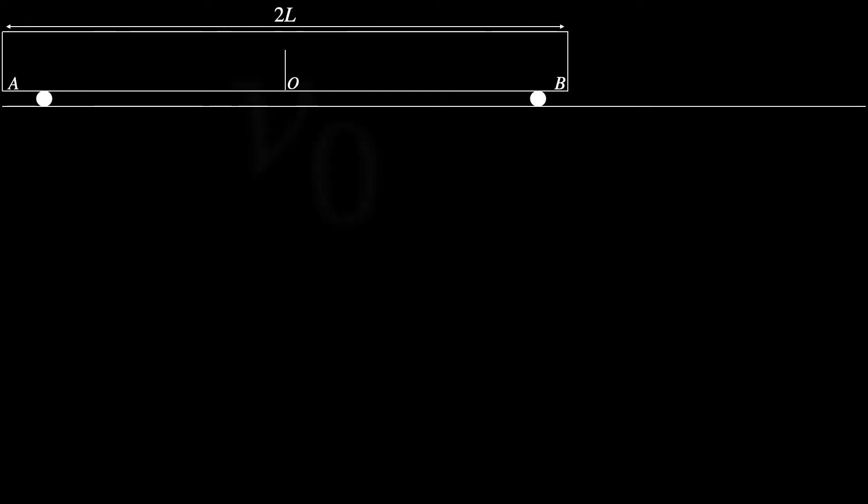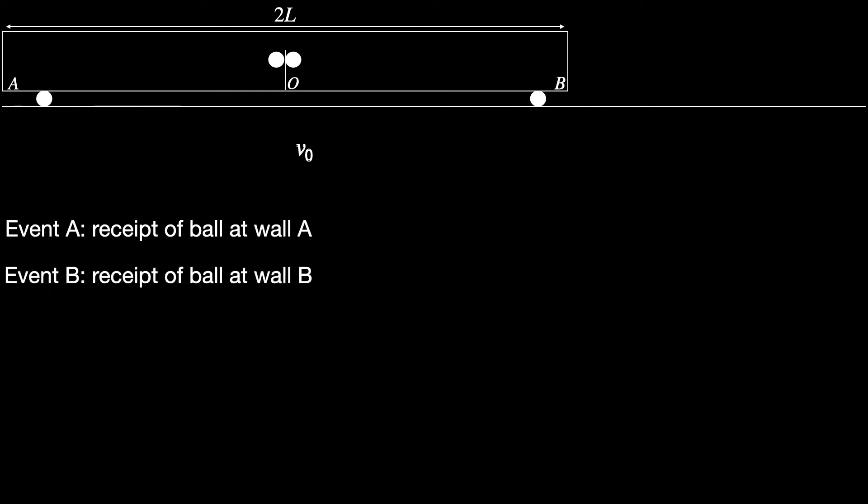So we will have a little thought experiment here. Consider a cart of length 2L with a machine at the center O throwing two tennis balls simultaneously at speed v0 and minus v0 towards the two walls A and B on the opposite sides where two receivers are there to catch them. Receipt of the balls at A and B are the two events we are interested in. Let us call them event A and event B. These two events are being observed by two sets of observers: one group standing on the ground, let's call them SG, and the other on board the cart, let's call them SC. Now consider two scenarios.